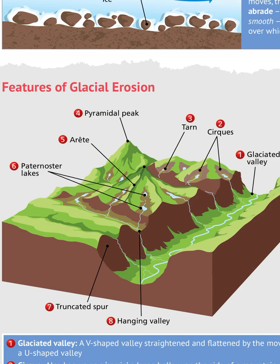The first feature of glacial erosion is a glaciated valley, also known as a U-shaped valley. This was a former V-shaped valley carved out by rivers, which has been straightened and flattened by the movement of a large glacier to become a U-shaped valley. These are highly recognisable by the wide and flat valley floor and the steep valley sides.